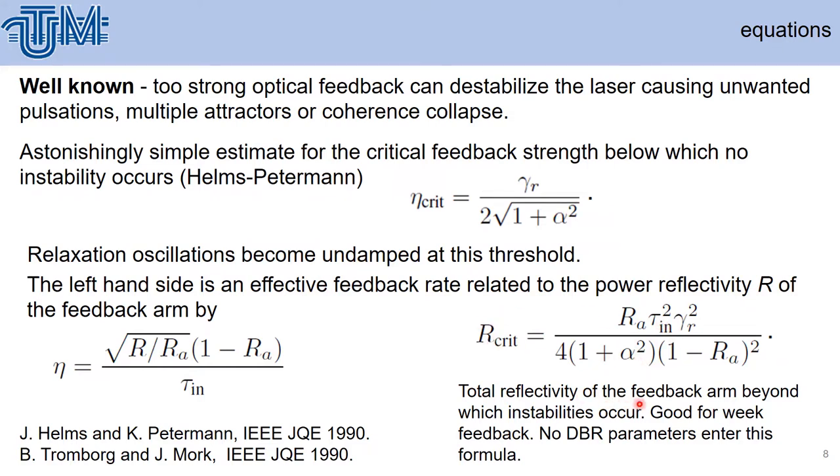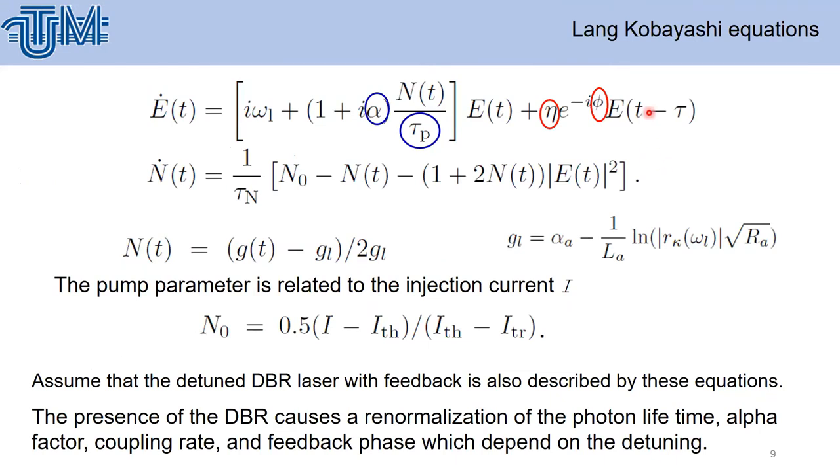We can obtain analytically the formula for reflectivity of feedback R beyond which instability occurs. For weak feedback, no DBR parameters enter this formula. We look for Lang-Kobayashi equations, which are presented here. The only difference with many papers presented before is that these parameters—alpha, tau, eta, and phi—which are constant in other cases, in our case all these parameters depend on detuning.